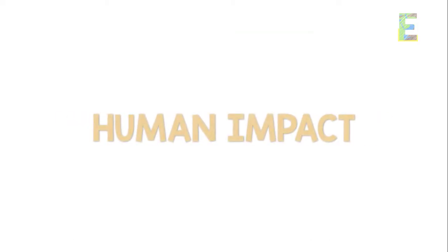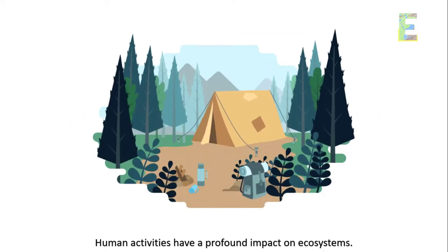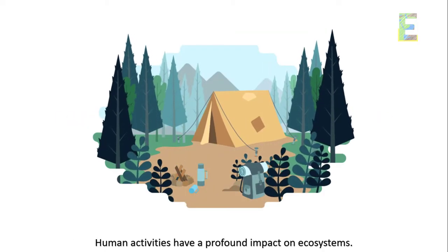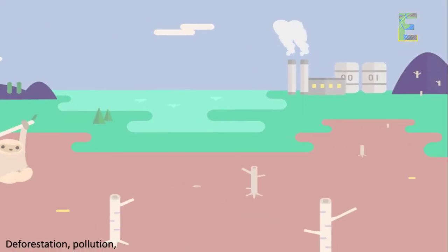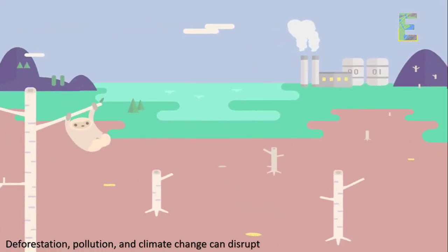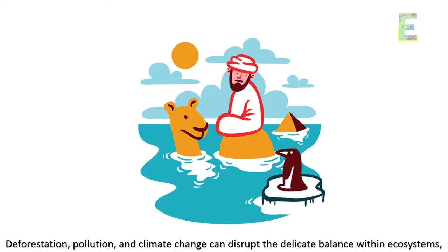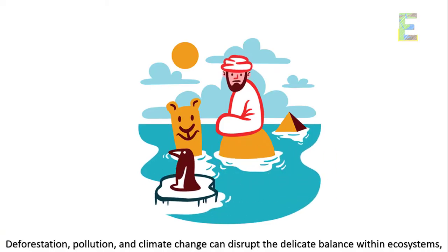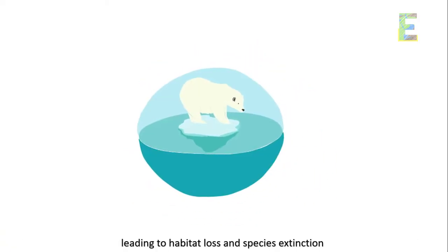Human impact — human activities have a profound impact on ecosystems. Deforestation, pollution, and climate change can disrupt the delicate balance within ecosystems, leading to habitat loss and species extinction.